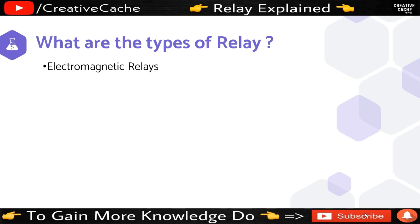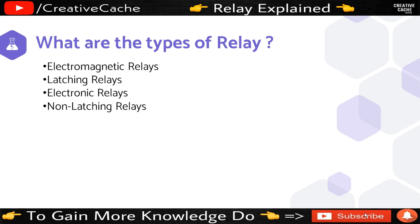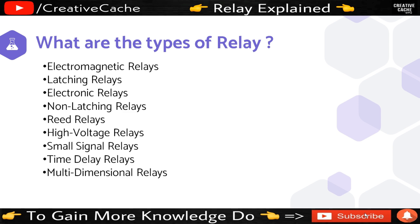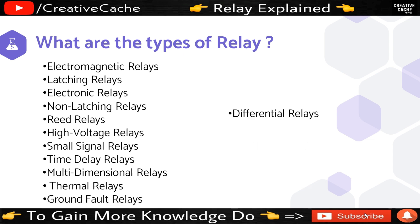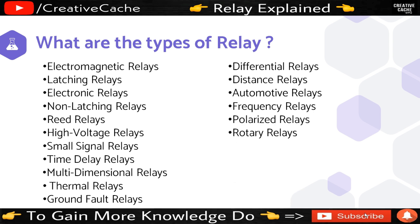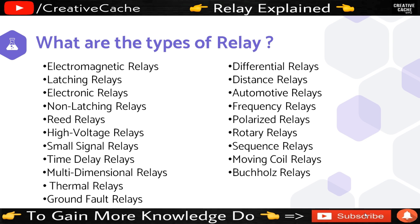The types of relay include: Electromagnetic relay, Latching relay, Electronic relay, Non-latching relay, Reed relay, High voltage relay, Small signal relay, Time relay, Multi-dimensional relay, Thermal relay, Ground fault relay, Differential relay, Distance relay, Automotive relay, Frequency relay, Polarized relay, Rotary relay, Sequence relay, Moving coil relay, Safety relay, and Supervision relay.